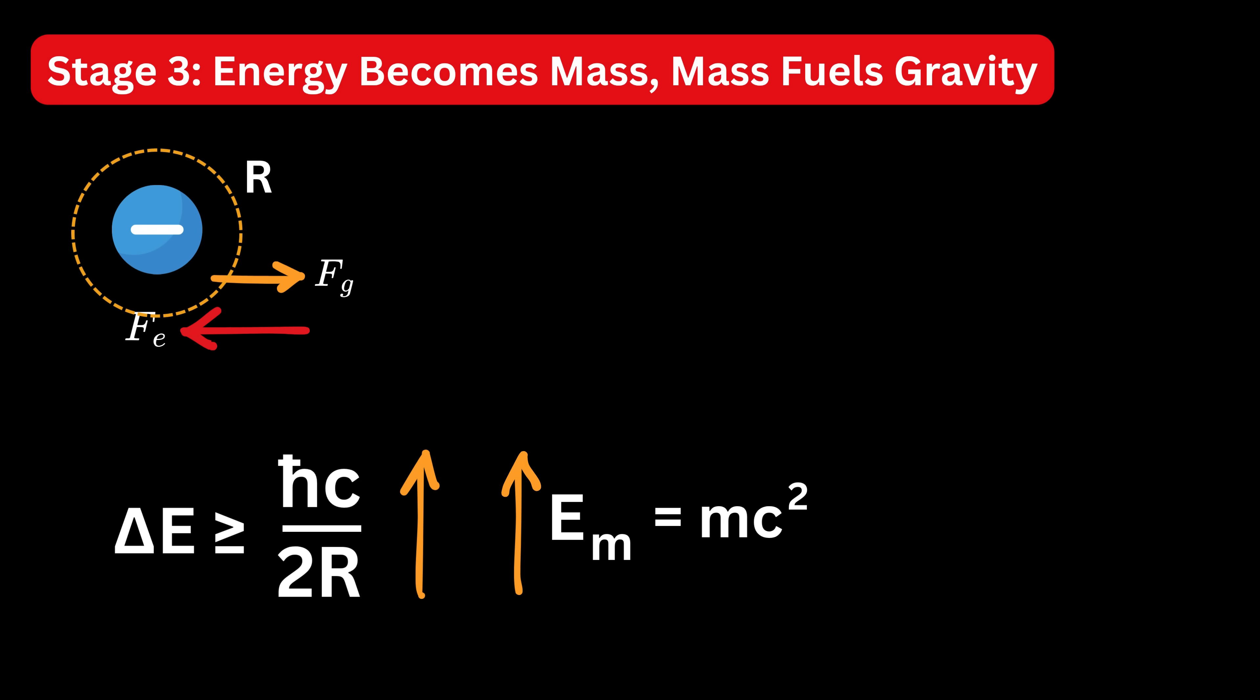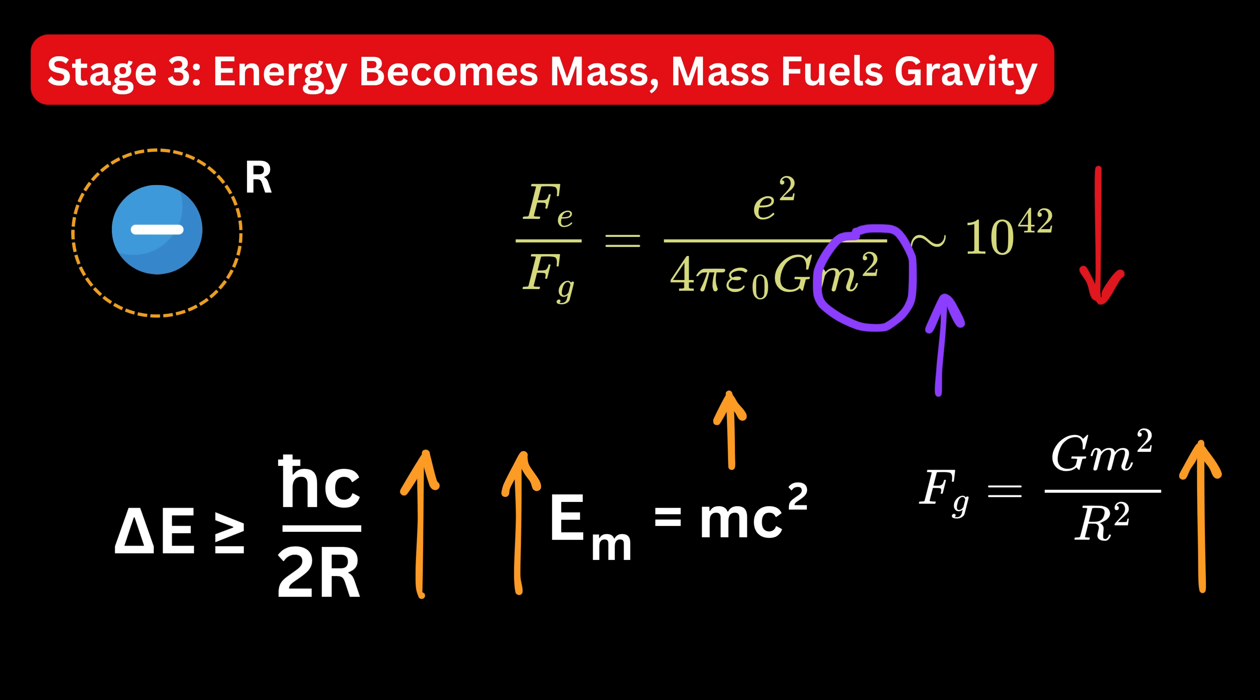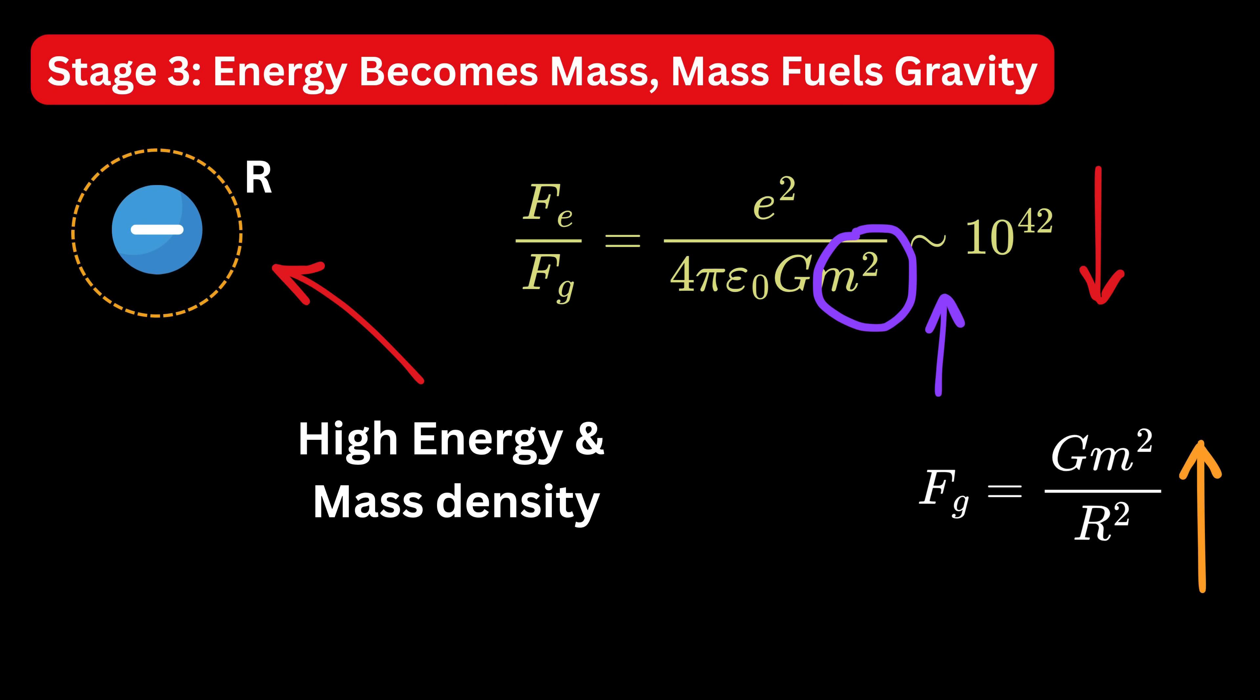As energy increases, the equivalent mass rises, and thus gravity strengthens. Earlier, gravity was negligible compared to electric force. But now, as effective mass grows, gravity starts catching up. At some point, the huge electric-to-gravity ratio we saw before, that 10 raised to 42, begins to shrink. It means that this small region is a region of high energy and mass density, resulting in a strong gravitational pull.